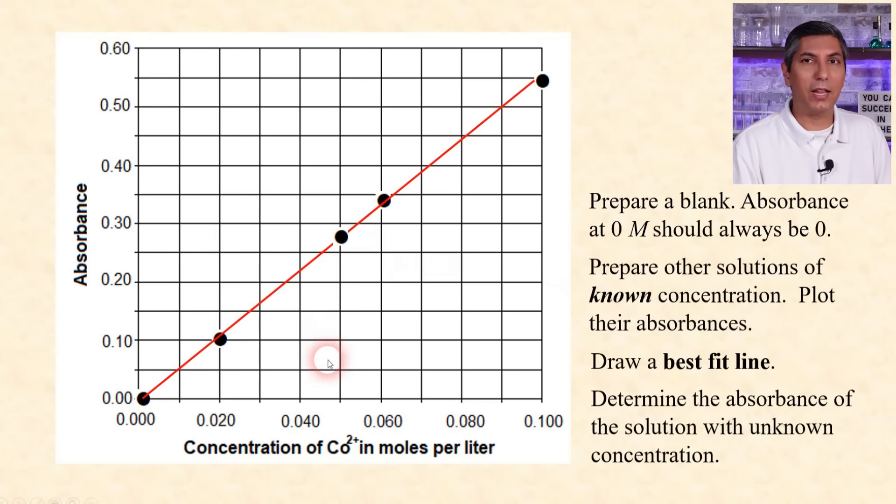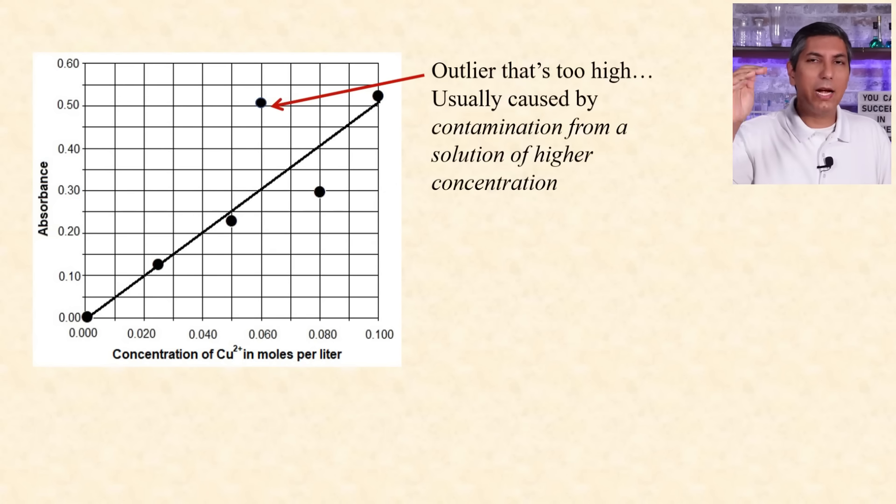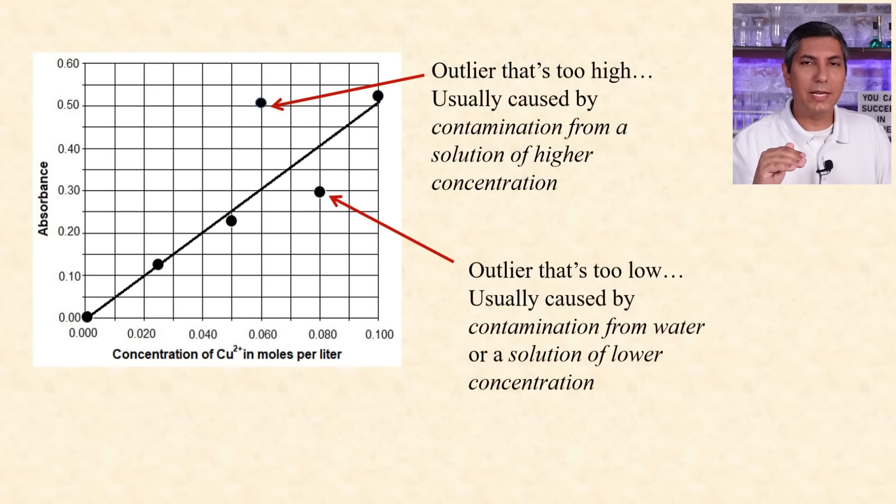If you have outliers on your calibration curve, there's usually a reason. If you have a dot that's too high, it probably got contaminated with a more concentrated solution. If a dot is too low, it probably got diluted with a more dilute solution, or very likely with water.